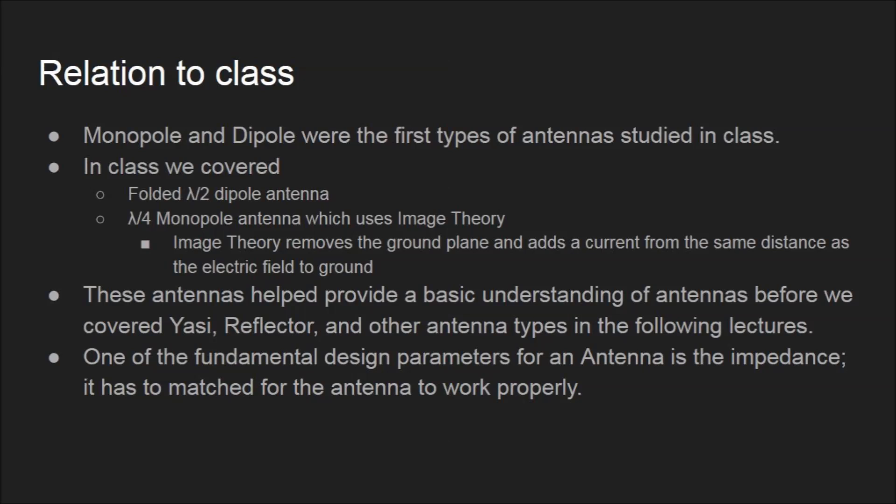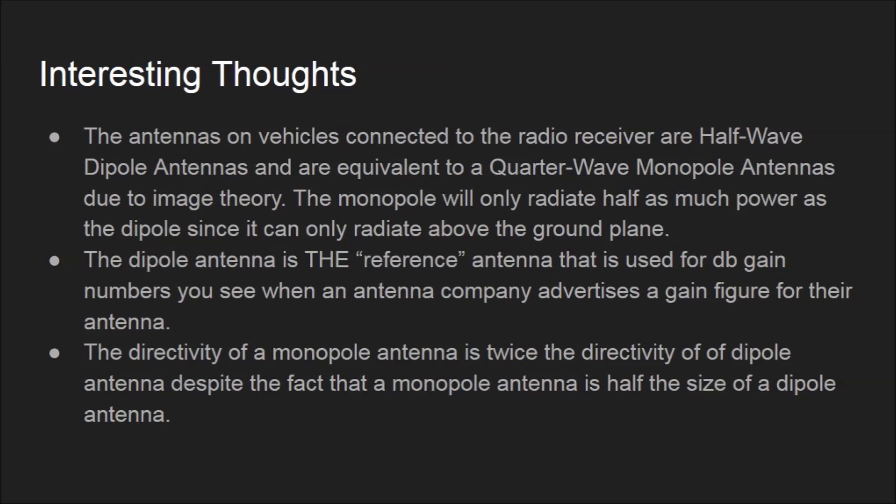One of the fundamental design parameters for an antenna is the impedance. A few interesting topics we ran across while researching: the antenna on vehicles connected to a radio receiver is a half-wave dipole antenna, equivalent to a quarter-wave monopole antenna due to image theory. The monopole antenna will only radiate half as much power as a dipole antenna since it can only radiate above ground. However, the directivity of a monopole antenna is twice the directivity of a dipole antenna, despite being half the size. The dipole antenna is also the reference antenna used by antenna manufacturers to advertise decibel gain figures.